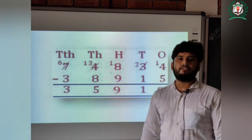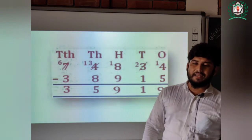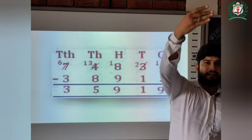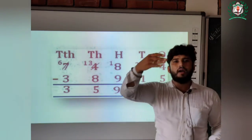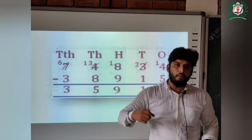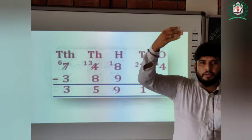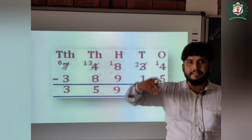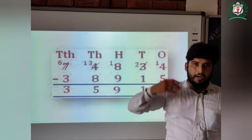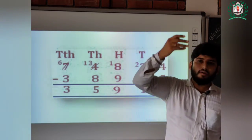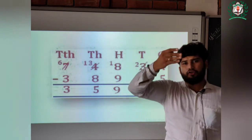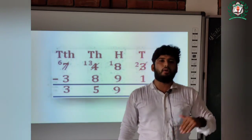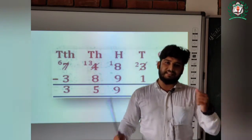Like this you have to do the subtraction. The key point is that you have to write the bigger number at the top and the smaller number below, with ones below ones, tens below tens, hundreds below hundreds, thousands below thousands, and ten thousands below ten thousands. Let's see one more example on the green board.